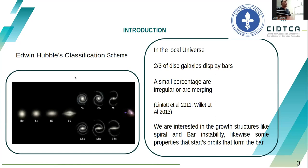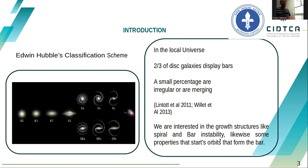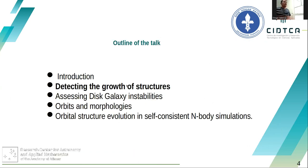Let me show the galaxy classification scheme. As you know, we have elliptical galaxies, and on the right part we have spiral galaxies — normal spirals and barred galaxies. Our interest is in the growth of structures like spirals and bar instabilities, as well as the properties of orbits that form the bar, to understand how these structures grow in N-body simulations.